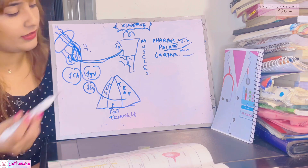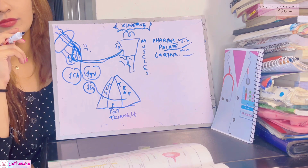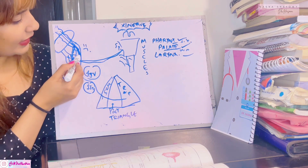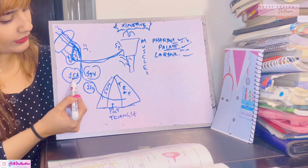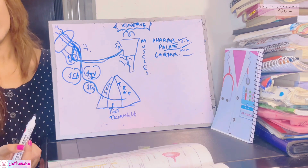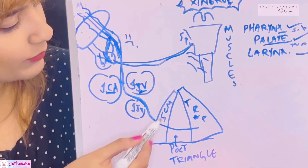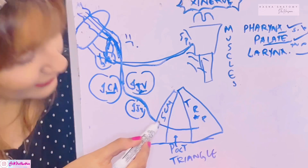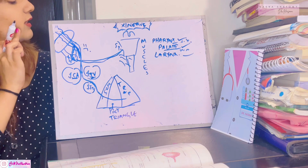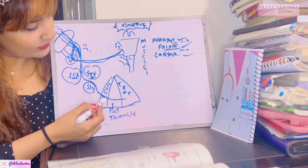The spinal part of the accessory nerve, now separated and on its own, descends between the internal carotid artery and internal jugular vein. It then comes superficial to the internal jugular vein and meets the anterior border of the sternocleidomastoid, entering that muscle and providing it with motor supply.